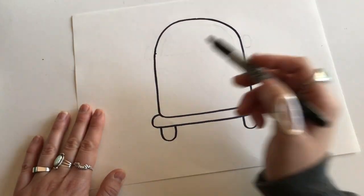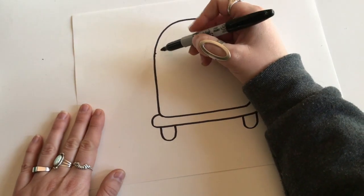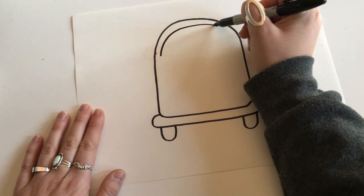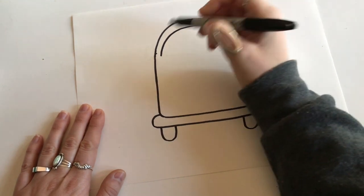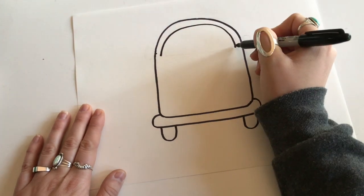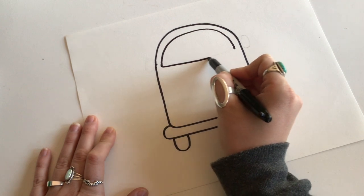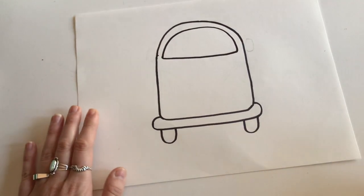All right, next we're gonna draw our windshield. So what you can do is we're just gonna draw a line that goes right beside the top of our van, just like that. So kind of following that same rainbow shape and then connecting it in a straight line at the bottom. There's our windshield.